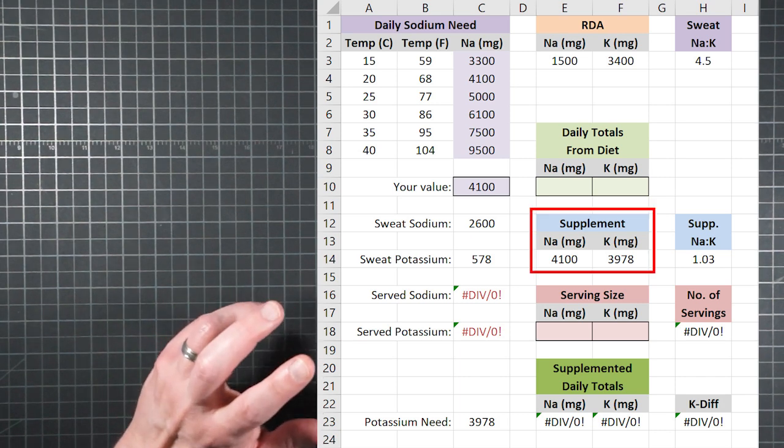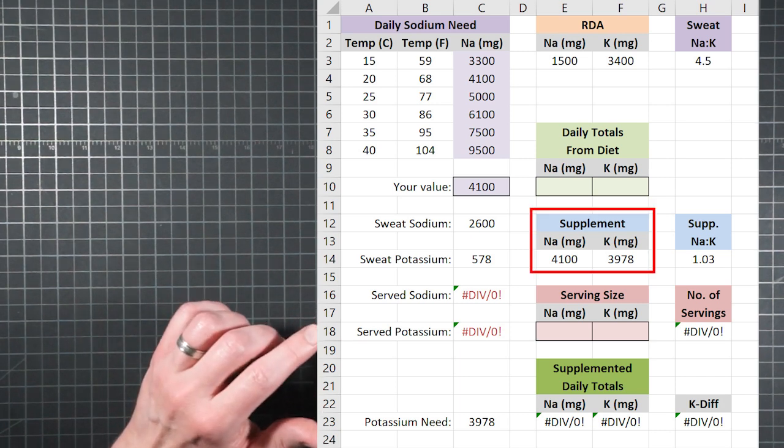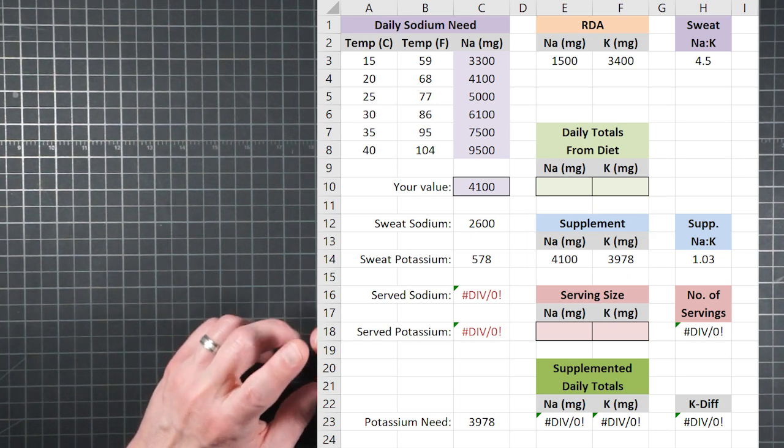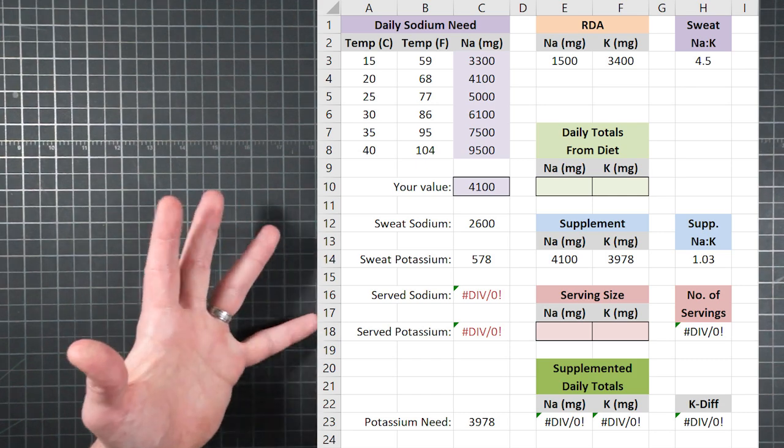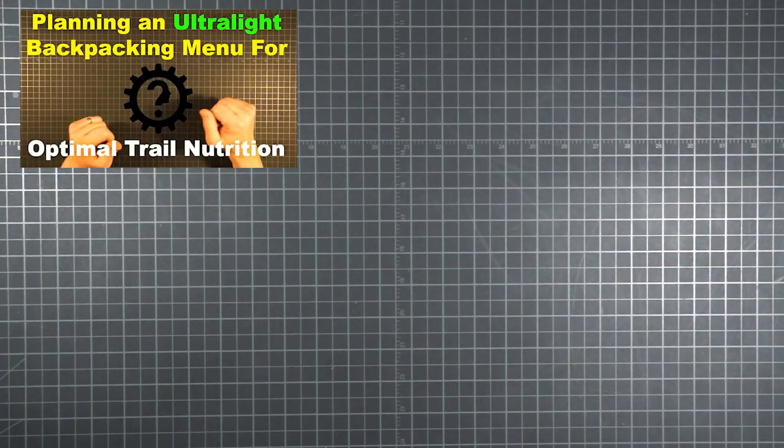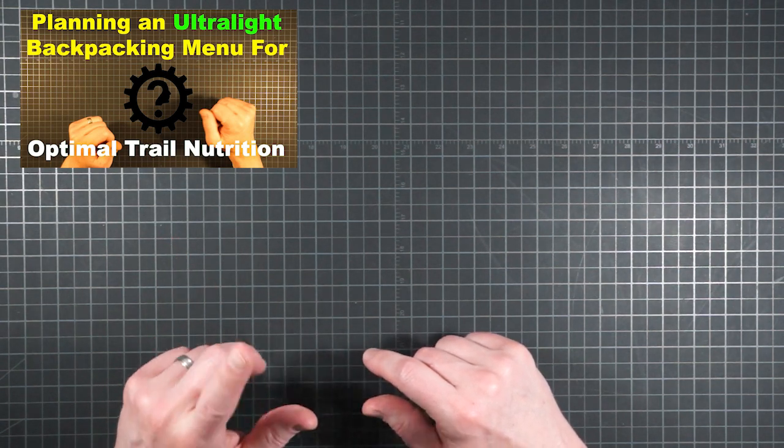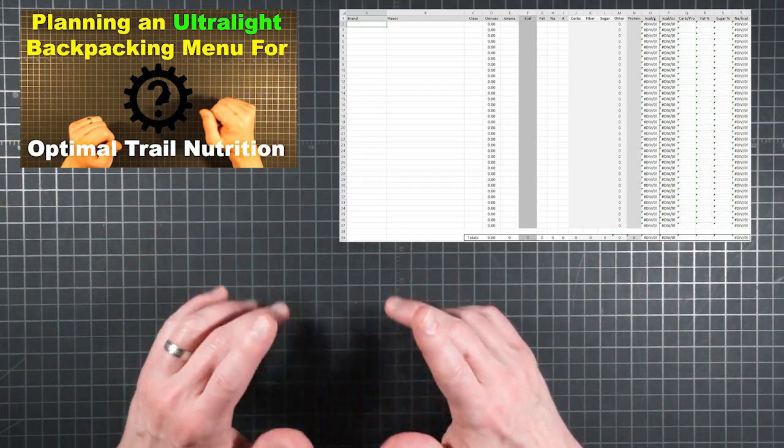Moving on, we've also now got some values in the supplement section, but they're not ready yet. You see, we can't compute how much you might need to supplement until we know how much you're already getting through food. So if you watched the video on planning an ultralight backpacking menu for optimal trail nutrition, you'll be familiar with the food charts menu planner tool.